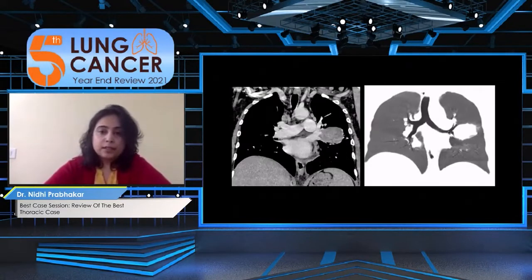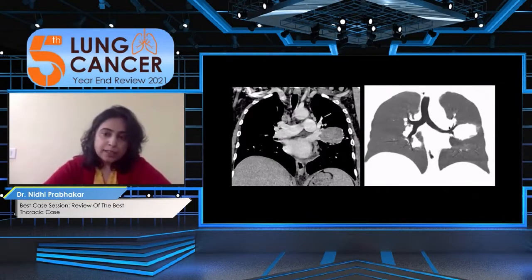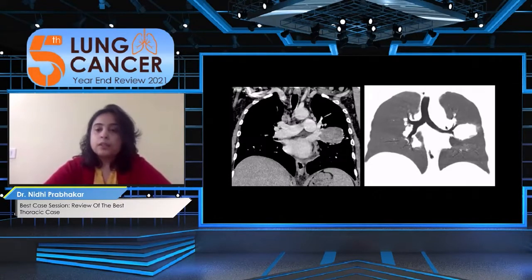On the lung window CT sections, the mass was abutting the bronchial bifurcation, but there was no cutoff — only narrowing of the bronchus.